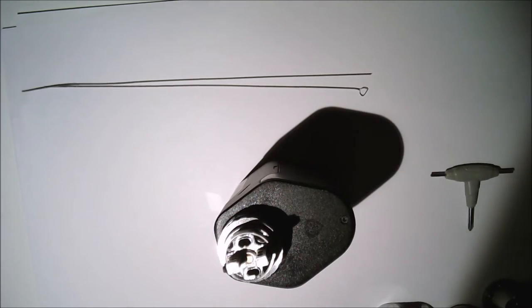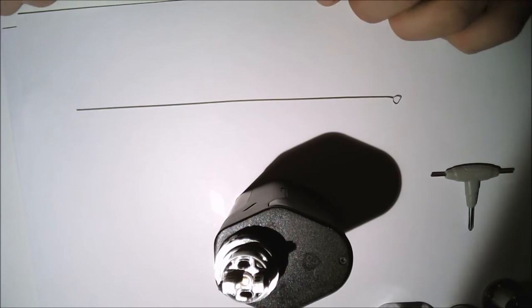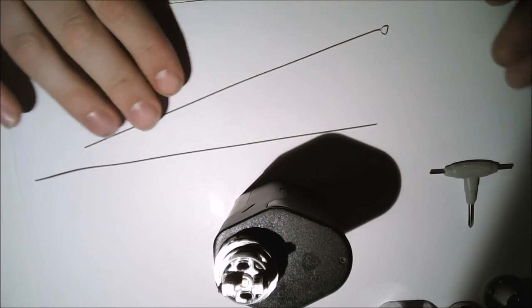So I'm going to use two strands of twisted 26 gauge Kanthal for this build. I've just twisted this up.